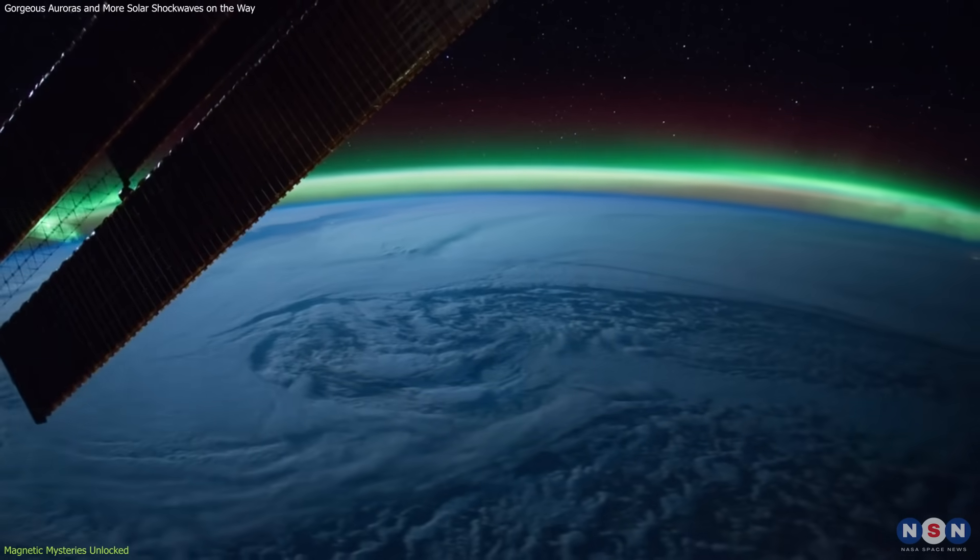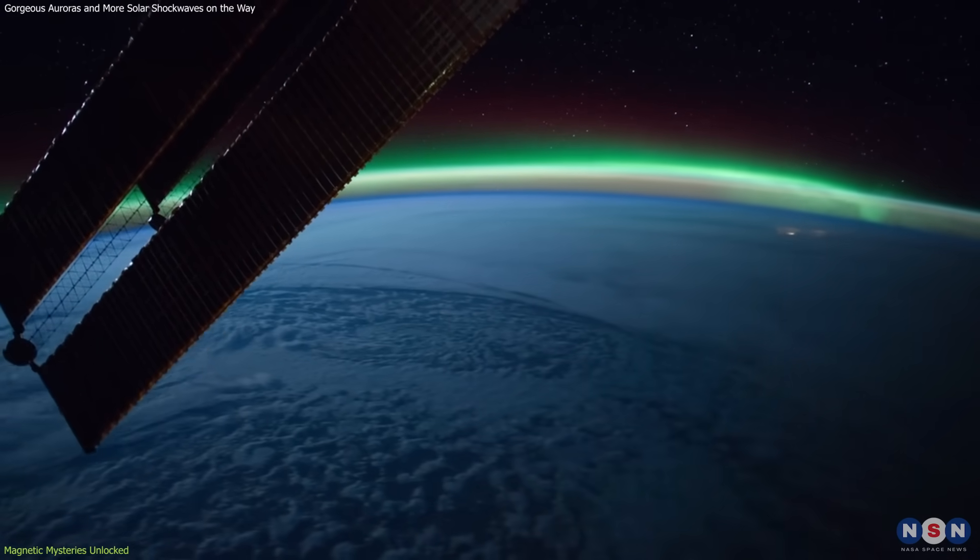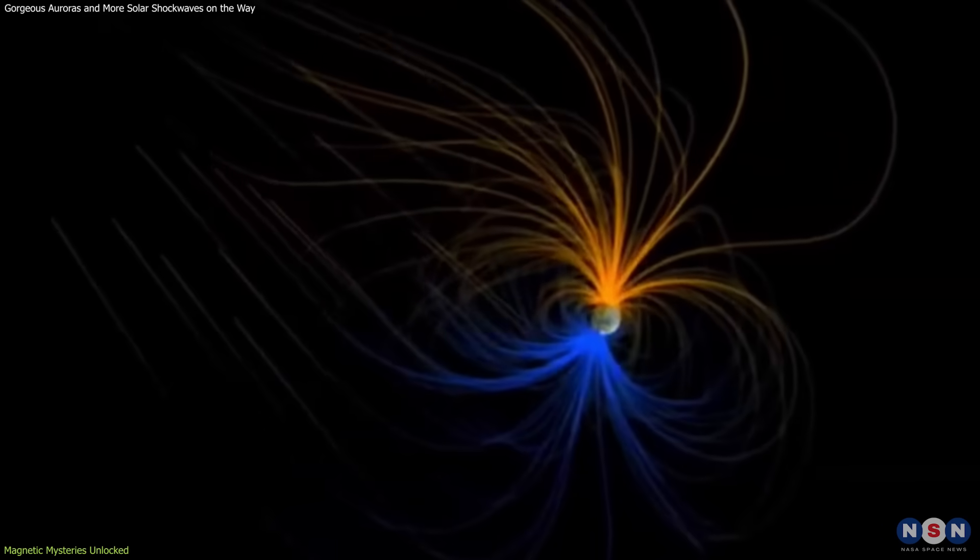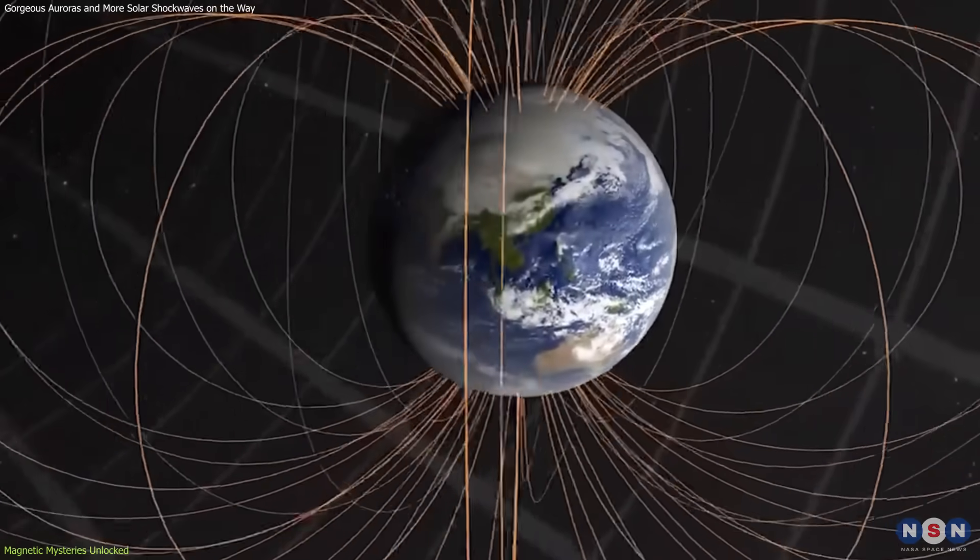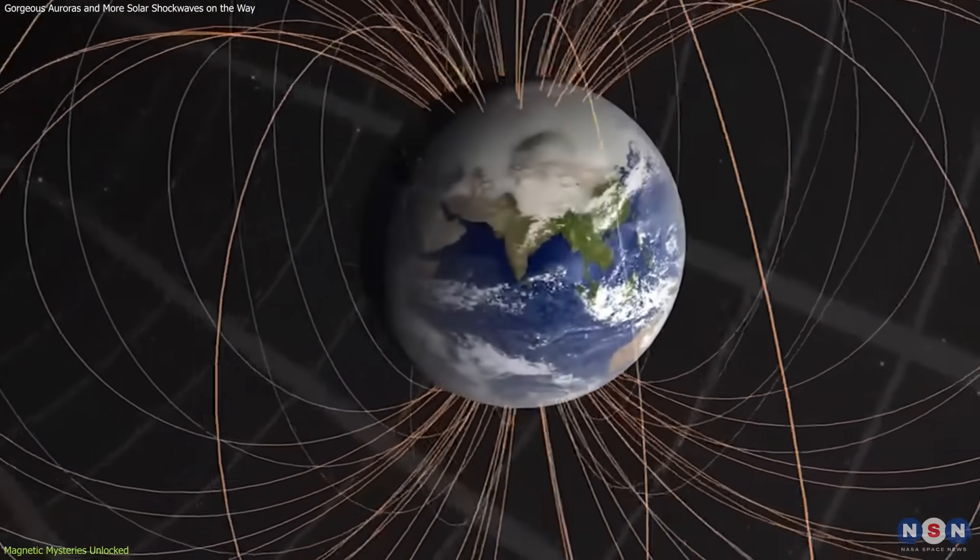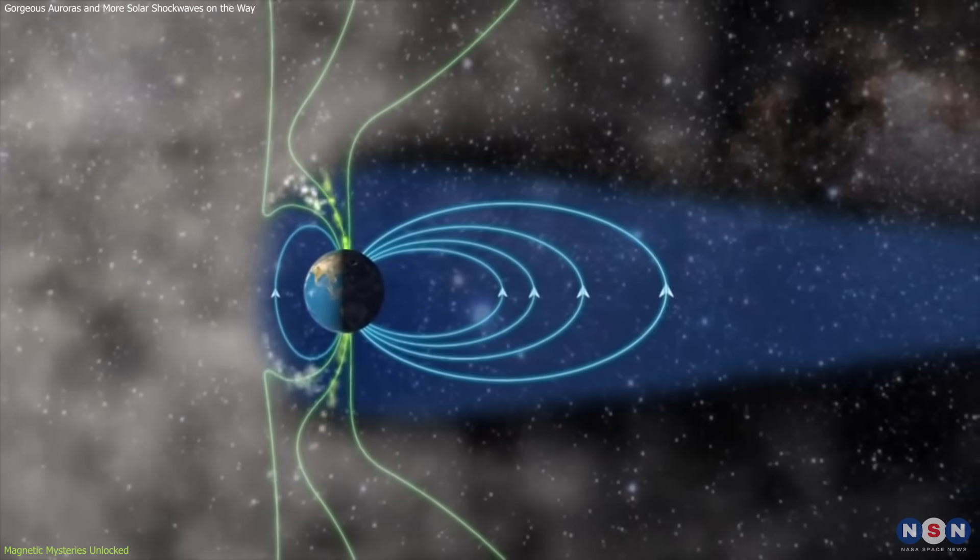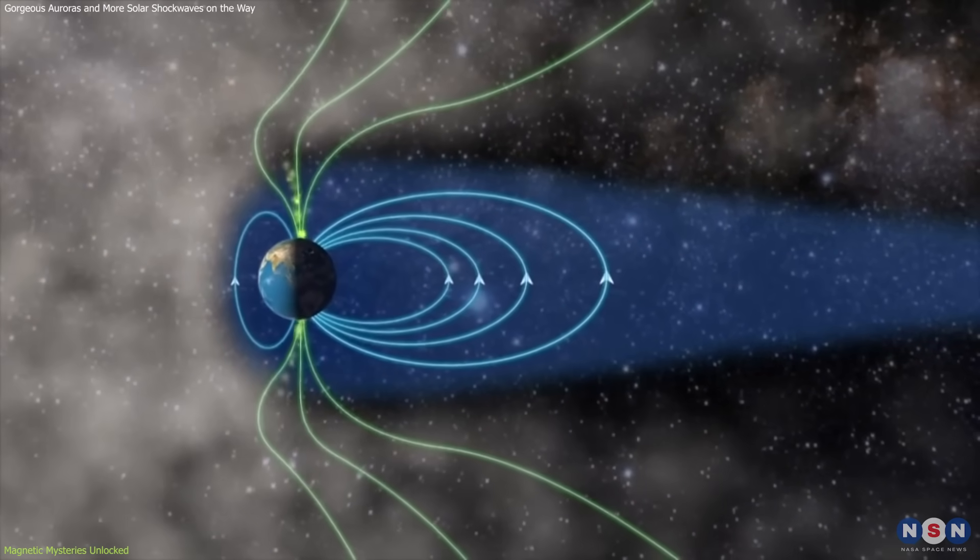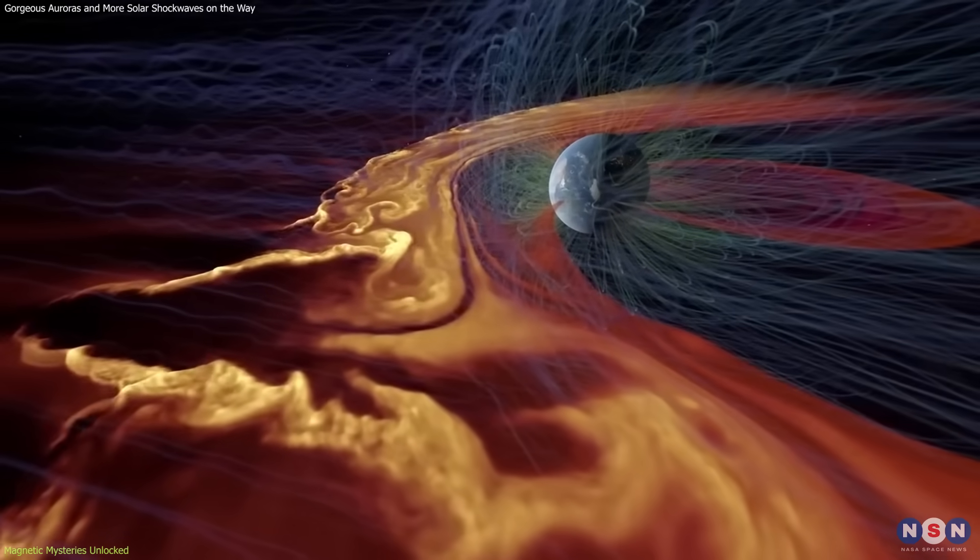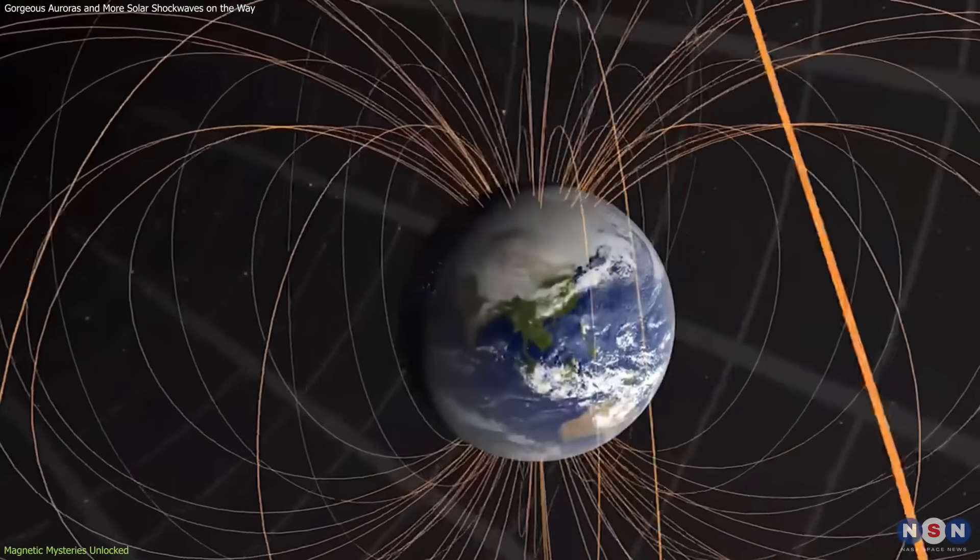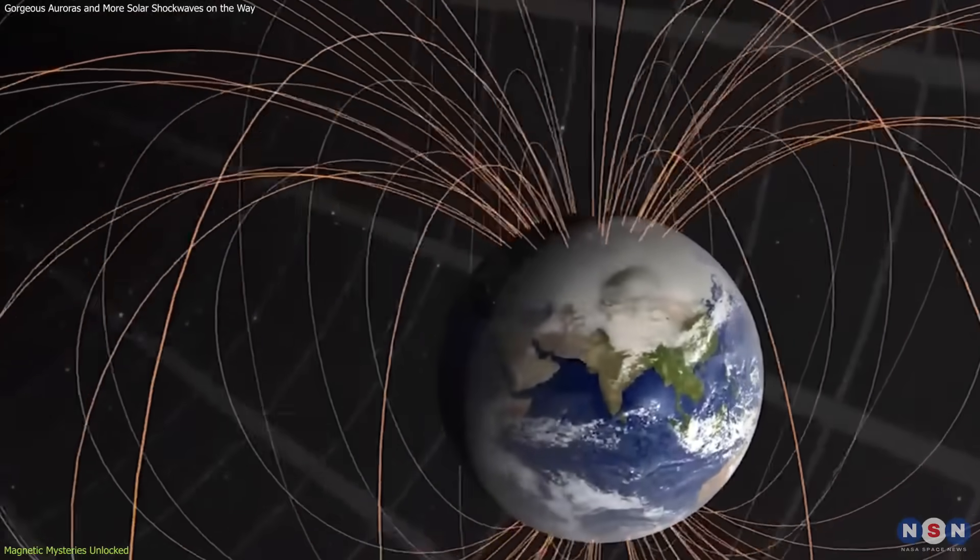In recent times, a significant point of concern and intrigue among scientists has been the weakening of Earth's magnetic field. This global magnetic field, generated by the iron-nickel core's movement, acts as a shield protecting us from solar winds and cosmic radiation. Over centuries, studies have shown that this field is not constant but dynamic, experiencing weakening and strengthening over various periods.